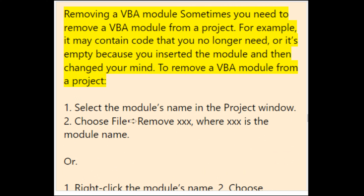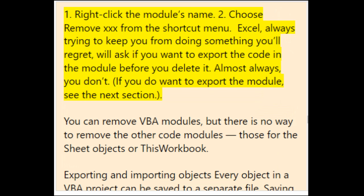Sometimes you need to remove a VBA module from a project — for example, if it contains code you no longer need, or it's empty. To remove a module, select its name in the Project window and choose File > Remove [module name]; or right-click the module's name and choose Remove from the shortcut menu. Excel will ask if you want to export the code before deleting — almost always you don't. Note: you can remove VBA modules, but there is no way to remove code modules for sheet objects or ThisWorkbook.